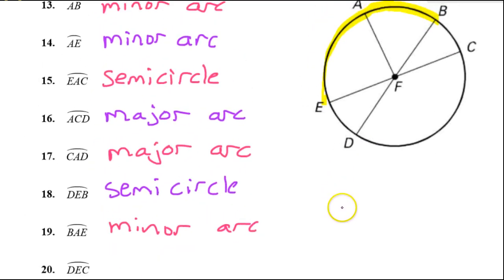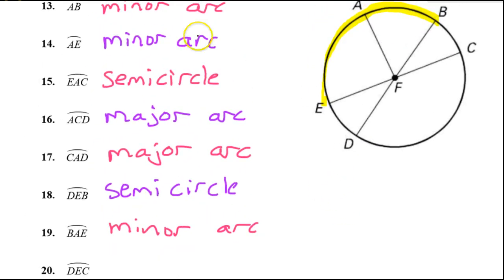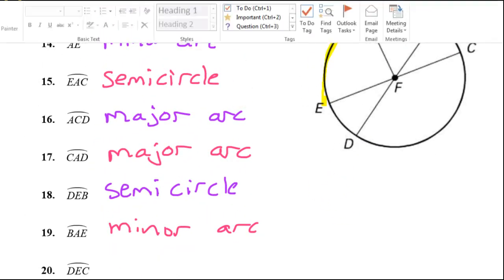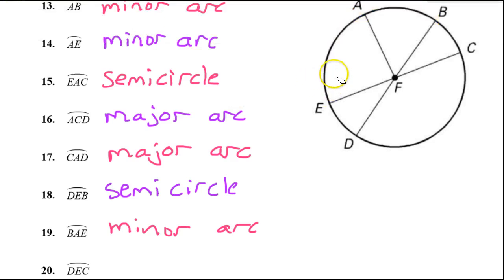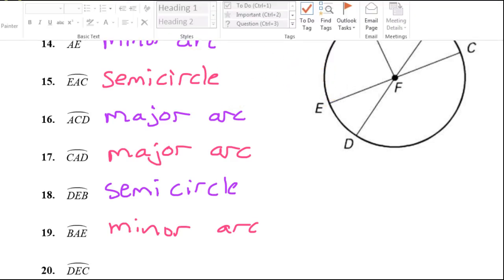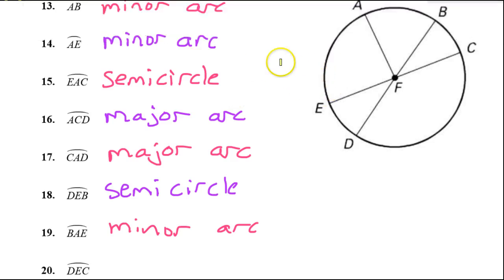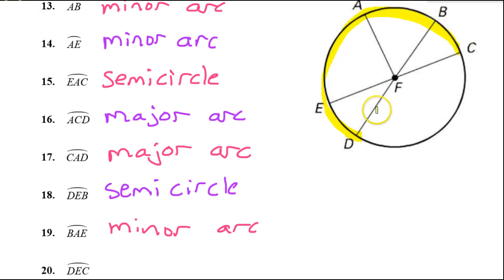What about arc DEC? From D through E on its way to C — that is a major arc. It is bigger than 180 degrees.